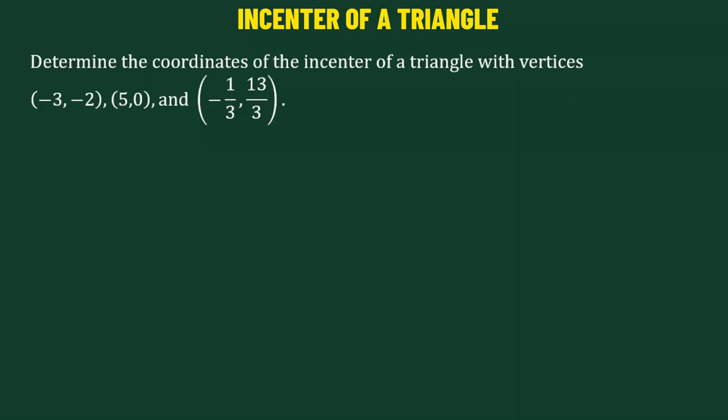In this problem, we need to determine the coordinates of the incenter of a triangle having vertices negative 3, negative 2; 5, 0; and negative 1 over 3, 13 over 3. In order to solve this problem, let's go through a concept.